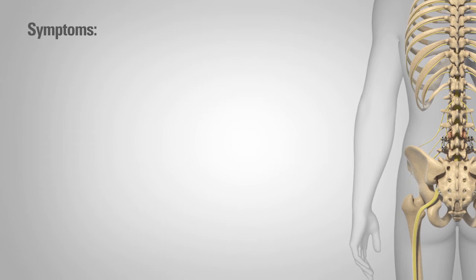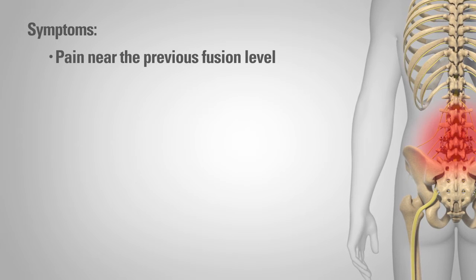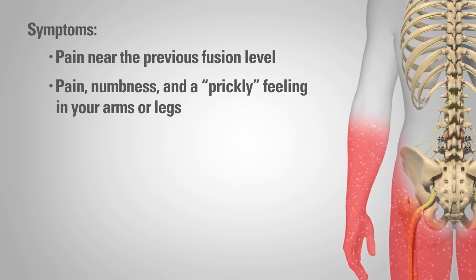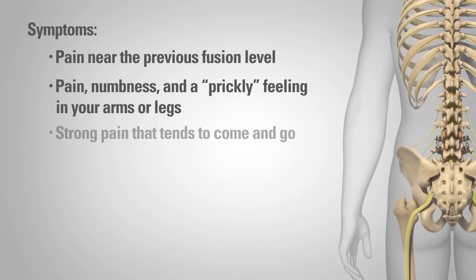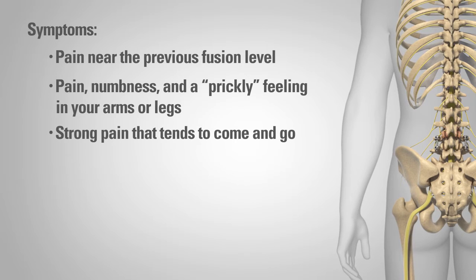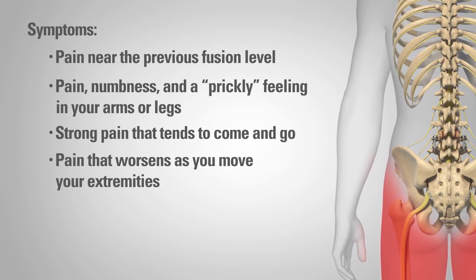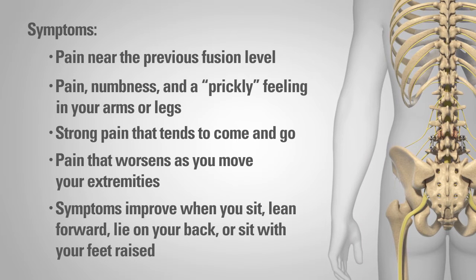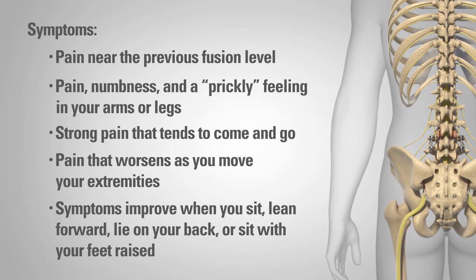Symptoms of adjacent segment disease include pain near the previous fusion level, pain, numbness, and a prickly feeling in your arms or legs, strong pain that tends to come and go, and pain that worsens as you move your extremities. Symptoms improve when you sit, lean forward, lie on your back, or sit with your feet raised.